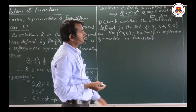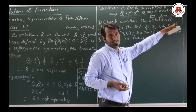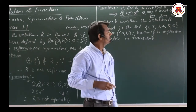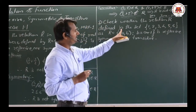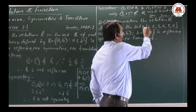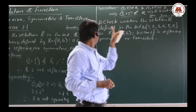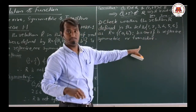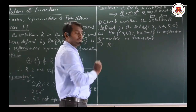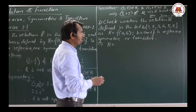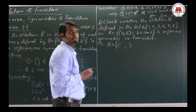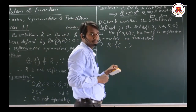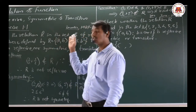This question was asked for 3 marks in June 2017, Karnataka State PU Board supplementary examination. The next question: check whether the relation R defined in the set A = {1, 2, 3, 4, 5, 6} as R = {(A, B) such that B = A + 1} is reflexive, symmetric, or transitive. It is a very simple question.